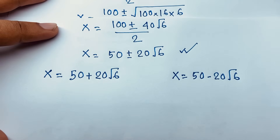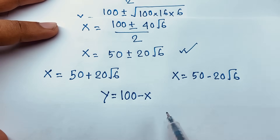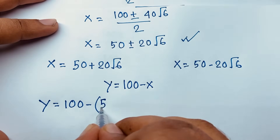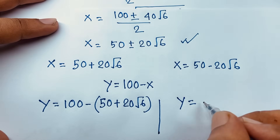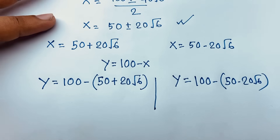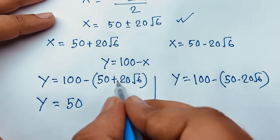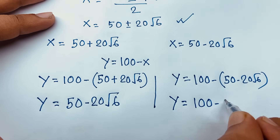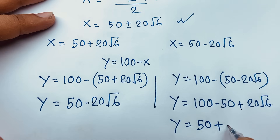Now we find y. Recall our third equation: y equals 100 minus x. When x equals 50 plus 20 square root of 6, then y equals 100 minus (50 plus 20 square root of 6), which gives y equals 50 minus 20 square root of 6. And when x equals 50 minus 20 square root of 6, then y equals 100 minus (50 minus 20 square root of 6), which gives y equals 50 plus 20 square root of 6.